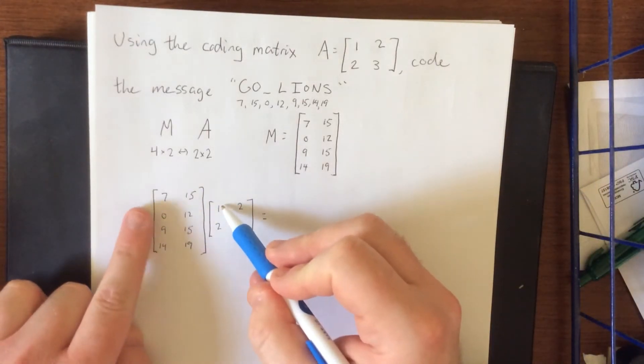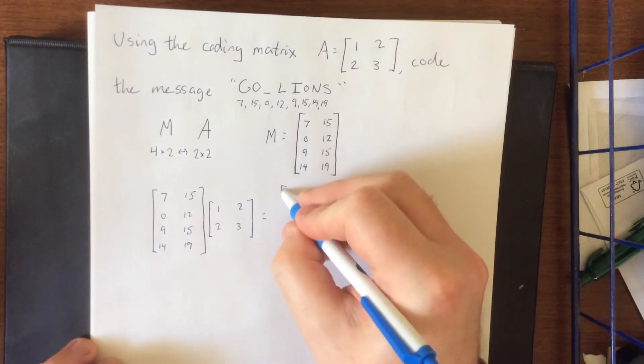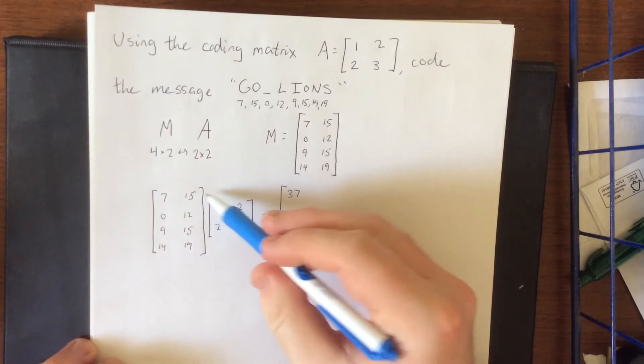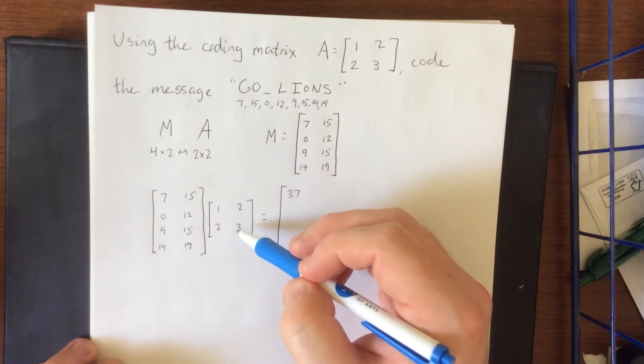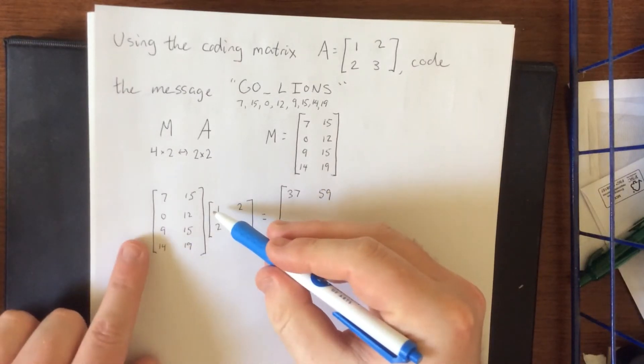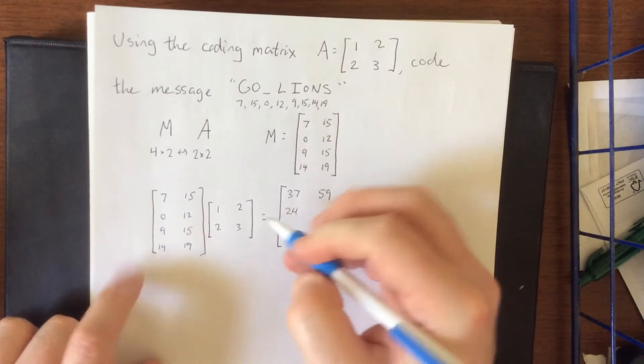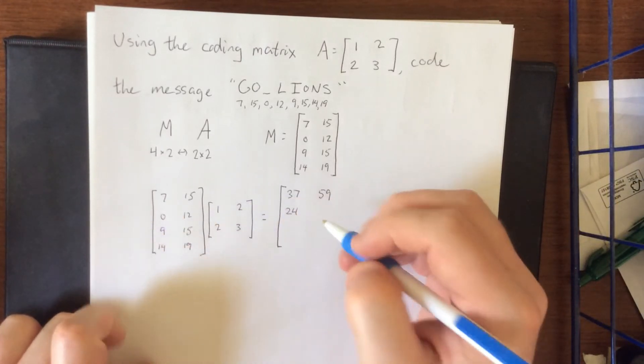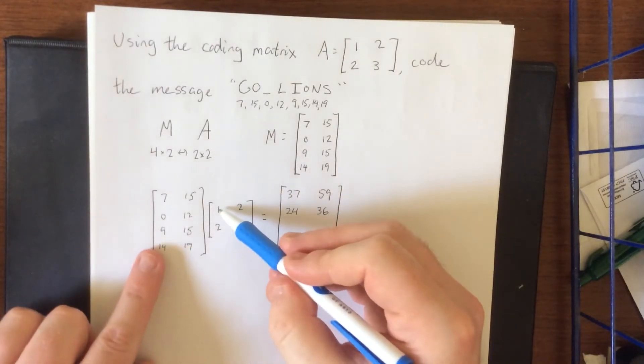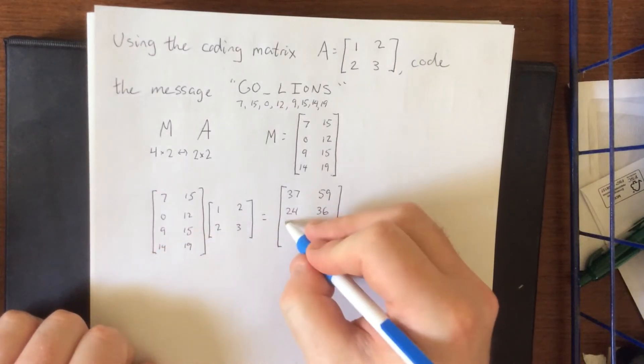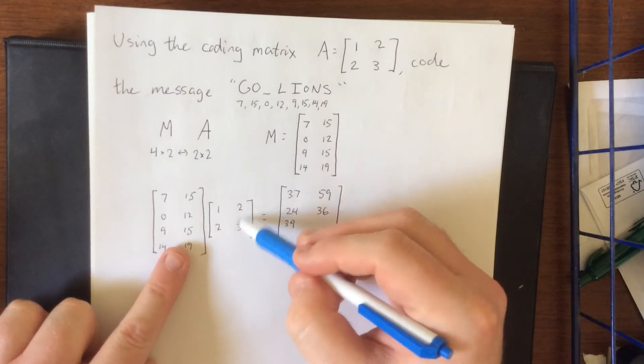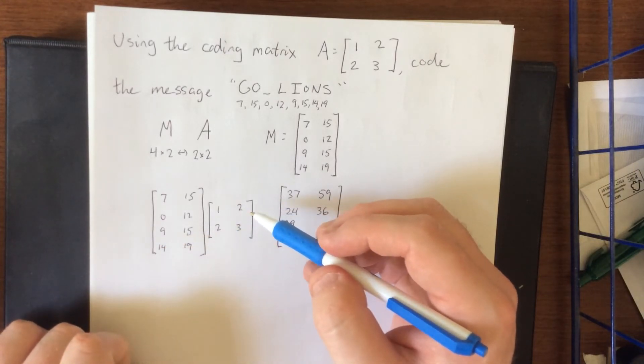So 1 times 7, 2 times 15, that'll be 37. And 2 times 7 is 14 plus 15 times 3 that's 45 plus 14, that'll be 59. 0 times 1 plus 12 times 2, and 0 times 2 plus 12 times 3. It's always nice multiplying when you get a little 0 in there. 1 times 9 plus 2 times 15, that'll be 39. 9 times 2 plus 3 times 15, that'll be 45 plus 18, 63.